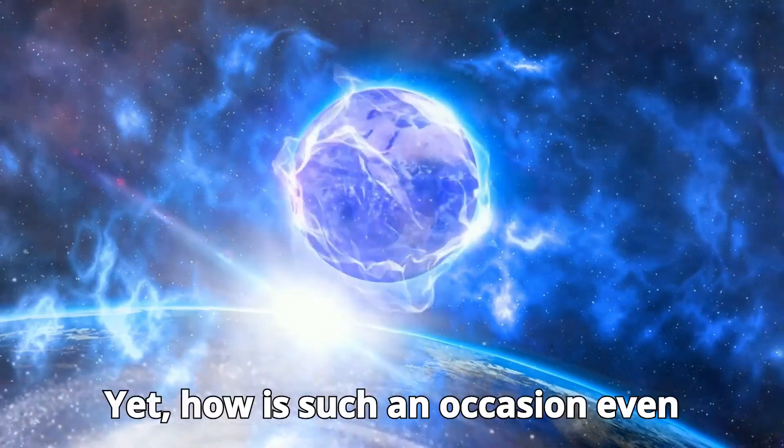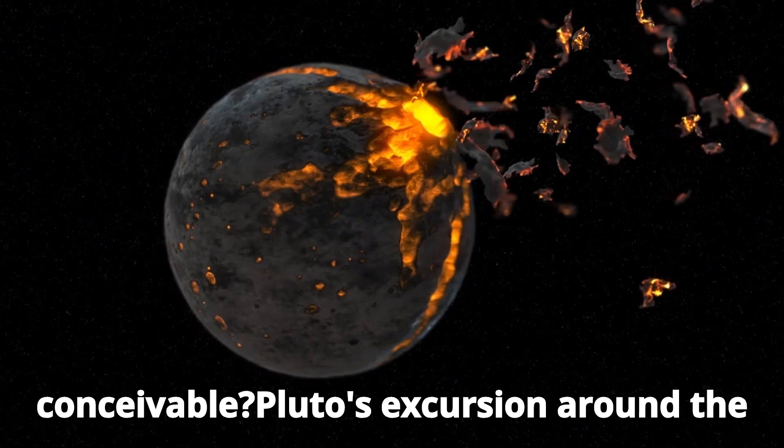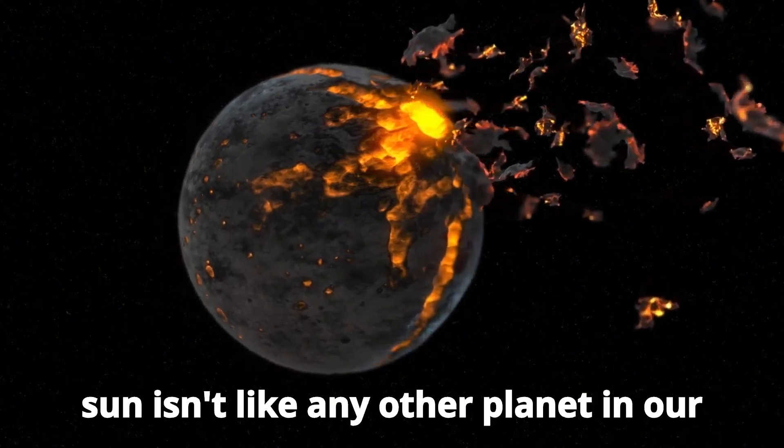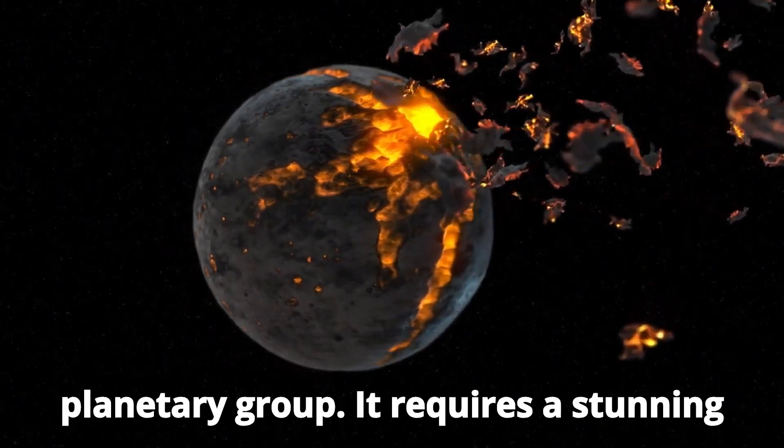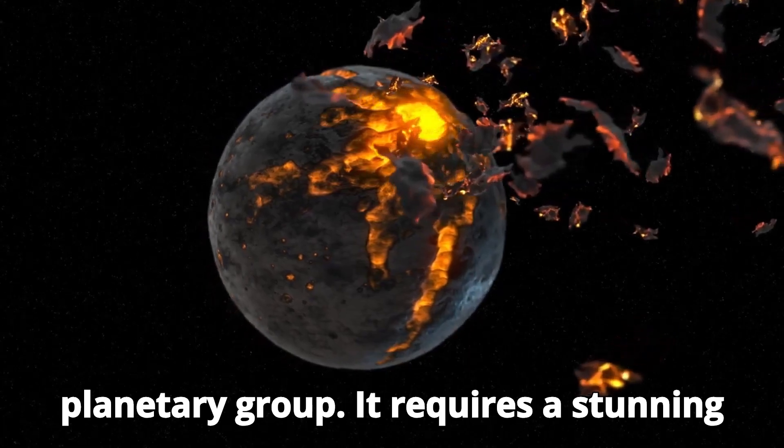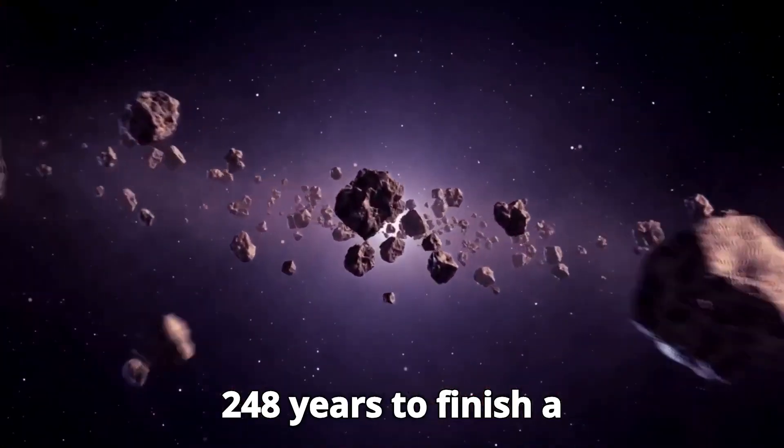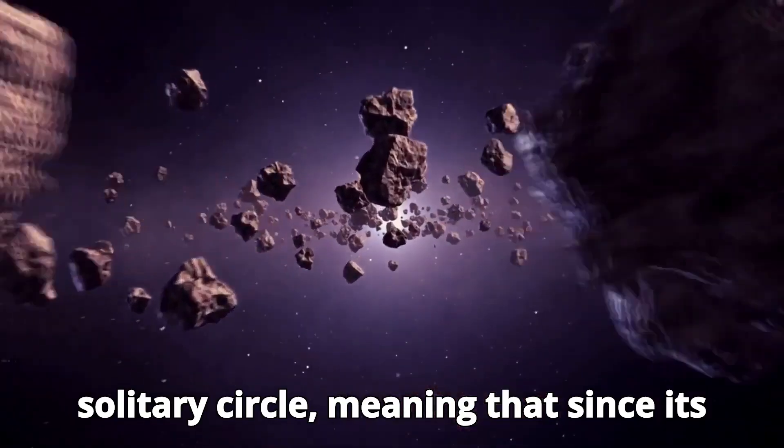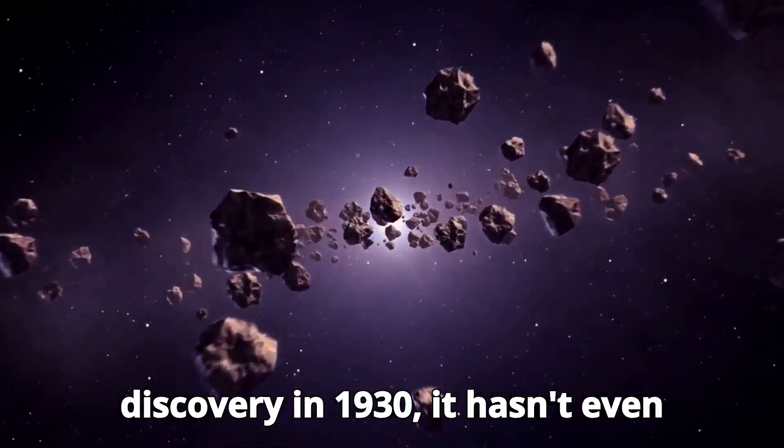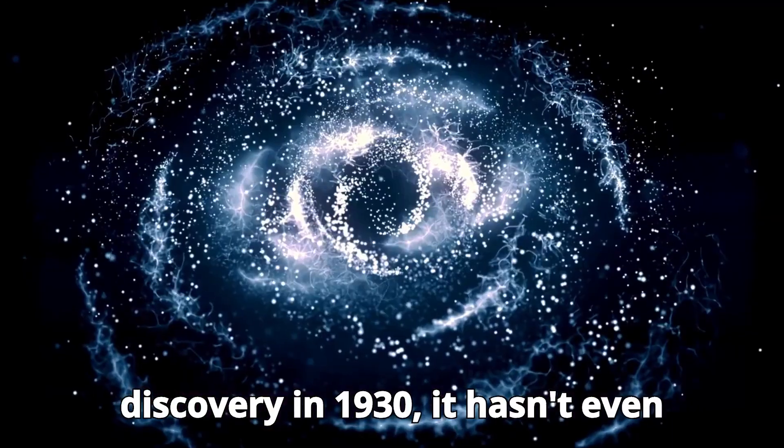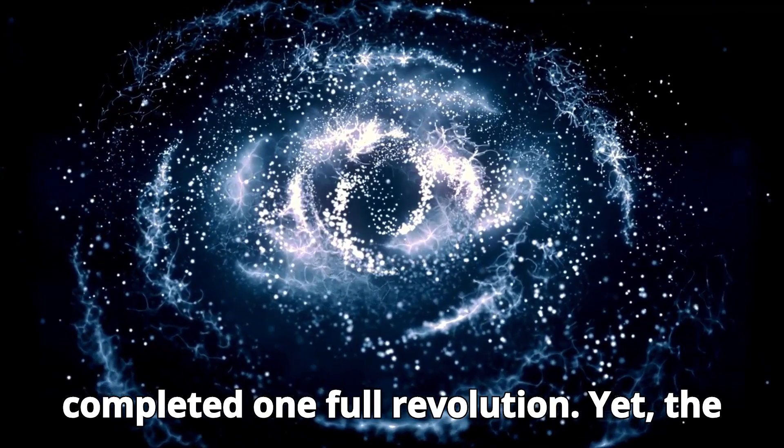Yet how is such an event even conceivable? Pluto's journey around the Sun isn't like any other planet in our planetary group. It requires a stunning 248 years to complete a single orbit, meaning that since its discovery in 1930, it hasn't even completed one full revolution.